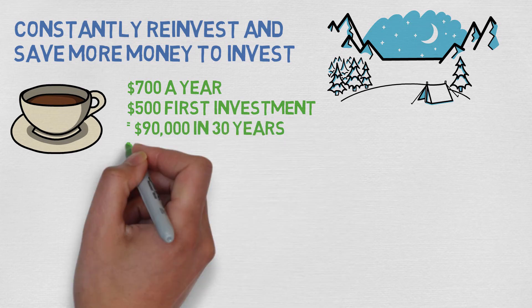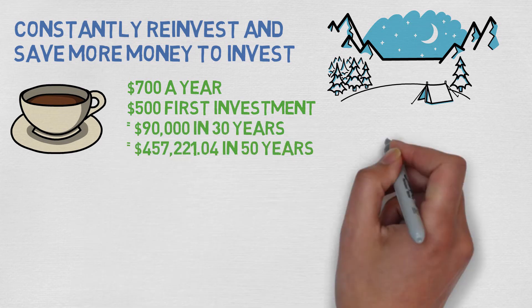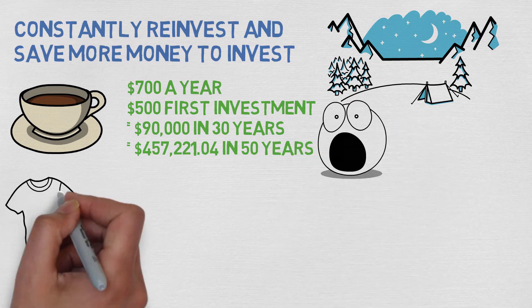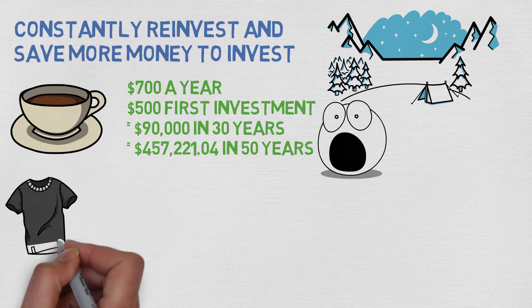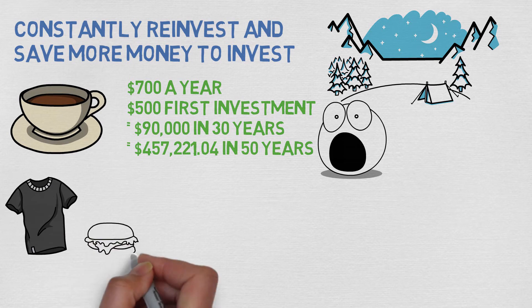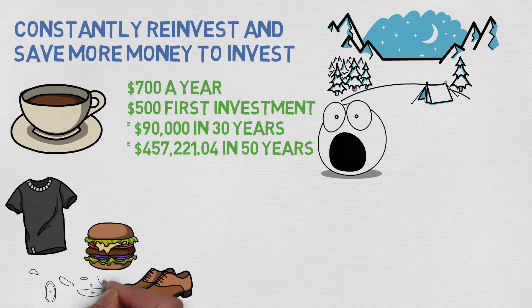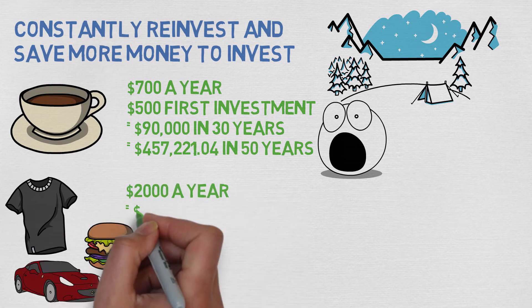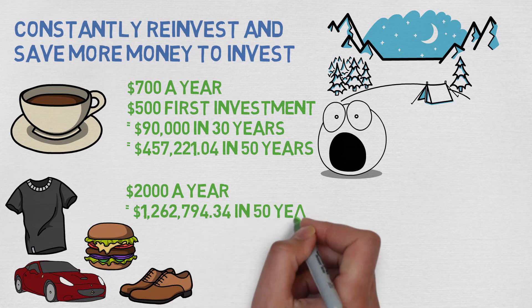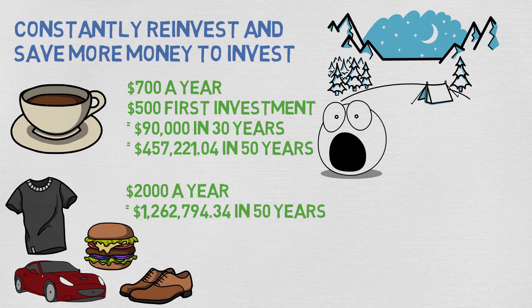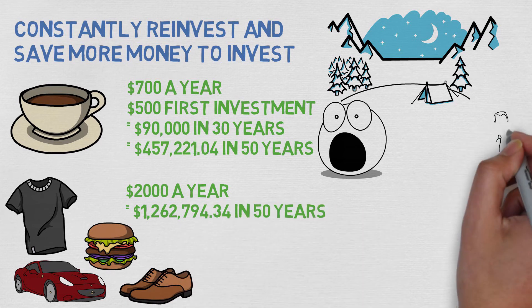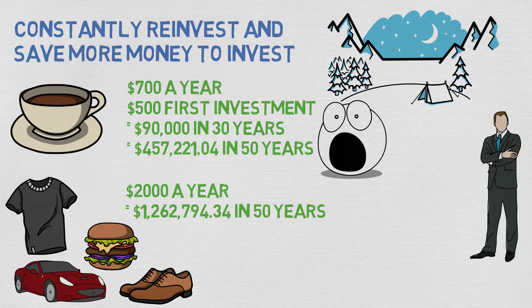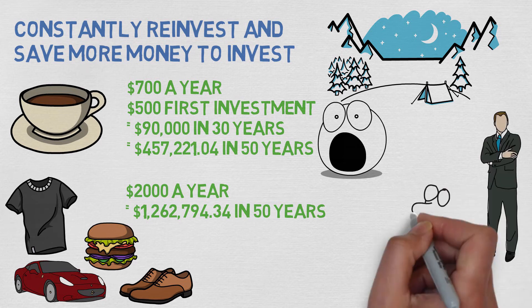And almost half a million in 50 years — and that is only from cutting out coffee. If you also start to save money on clothes, shoes, drinks, lunches, and cars, investing 2,000 dollars a year leads to over 1.2 million dollars in 50 years. So there you go — you are now a millionaire just by saving and investing 2,000 dollars a year and reinvesting your profits.